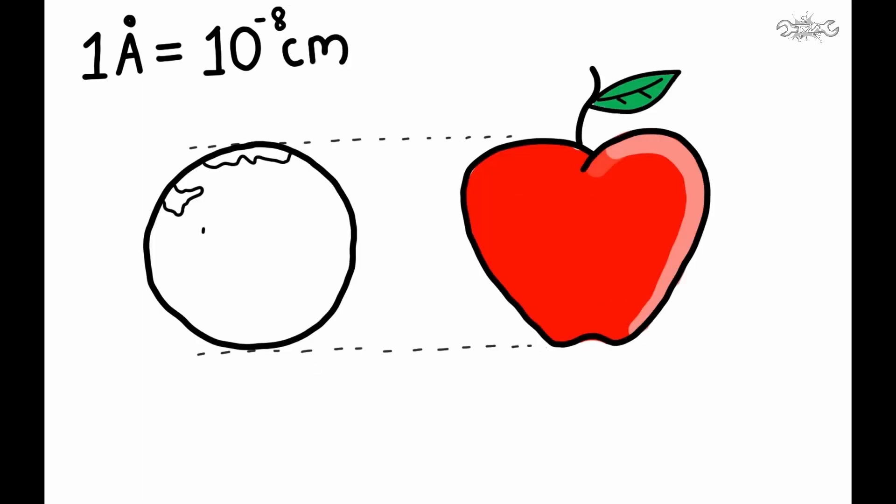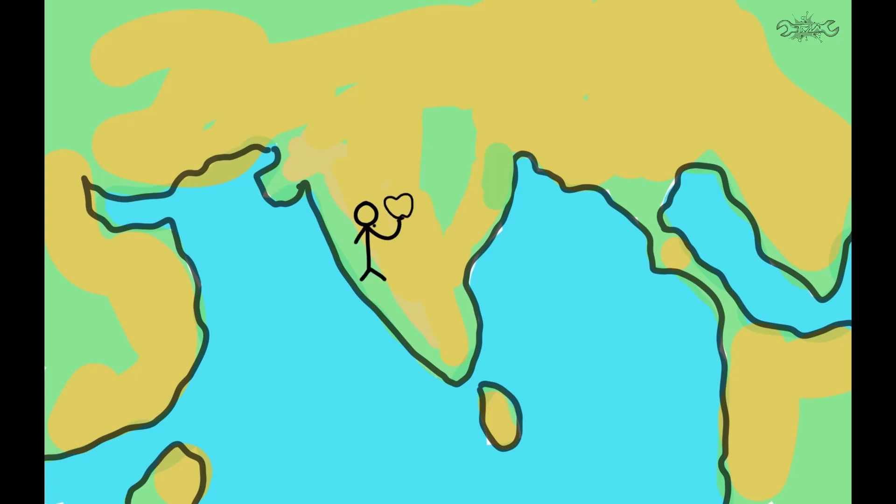These atoms are 1-2 angstroms in radius. Another way to remember this size is, if an apple is magnified to the size of the earth, then the atoms in the apple are approximately the size of the original apple.